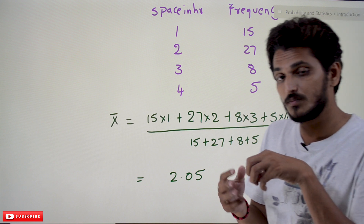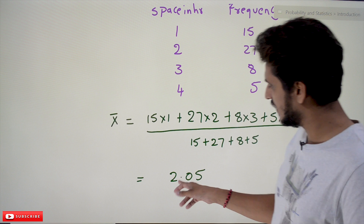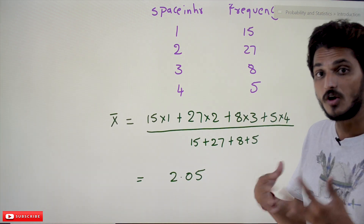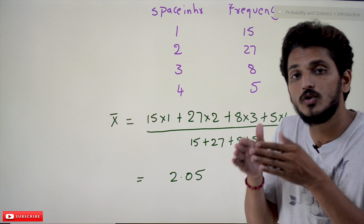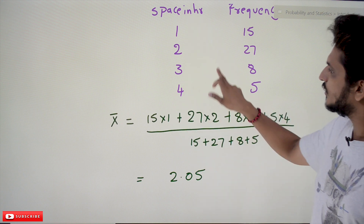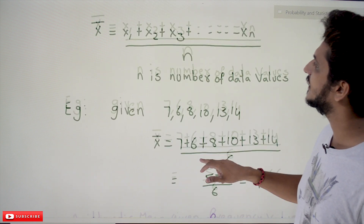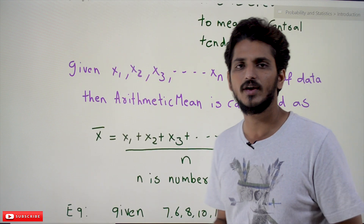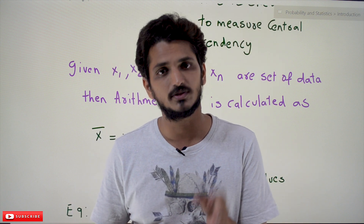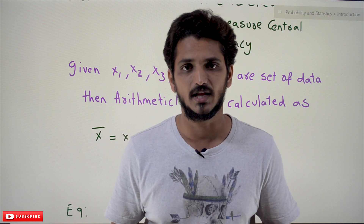The result of 2.05 means most car park users are parking for around two hours — that is the central tendency value. Hope you understand how to calculate arithmetic mean for central tendency. If you have any questions, please post them in the comment section. Please subscribe to our channel and press the bell icon for the latest updates.